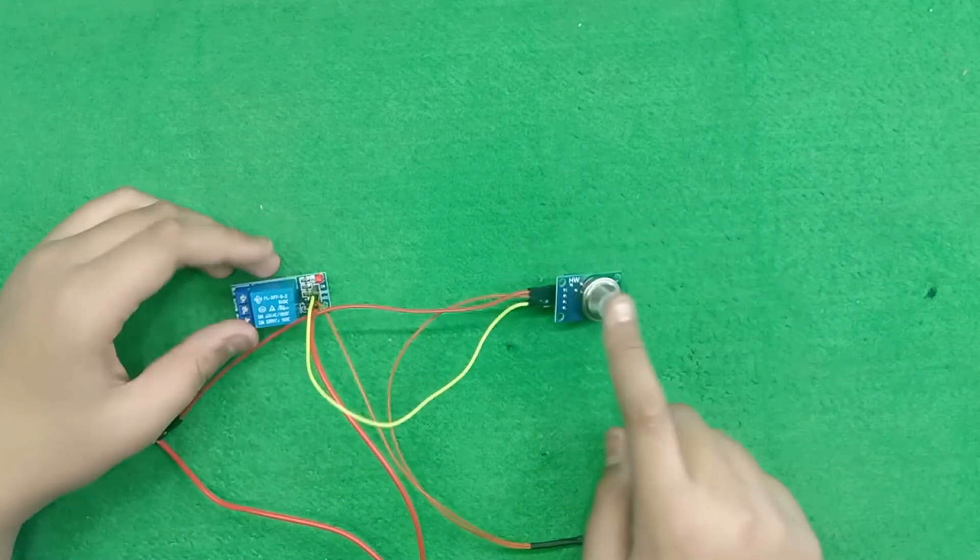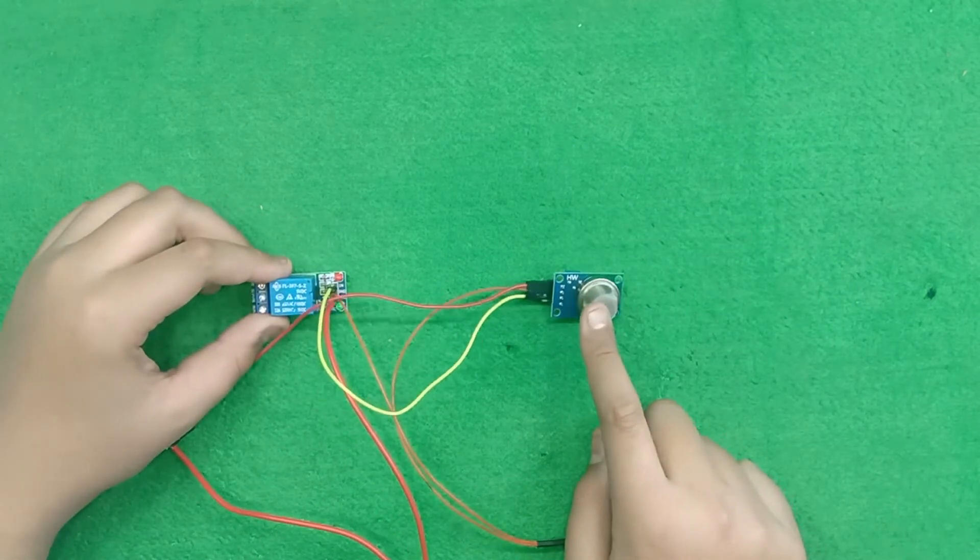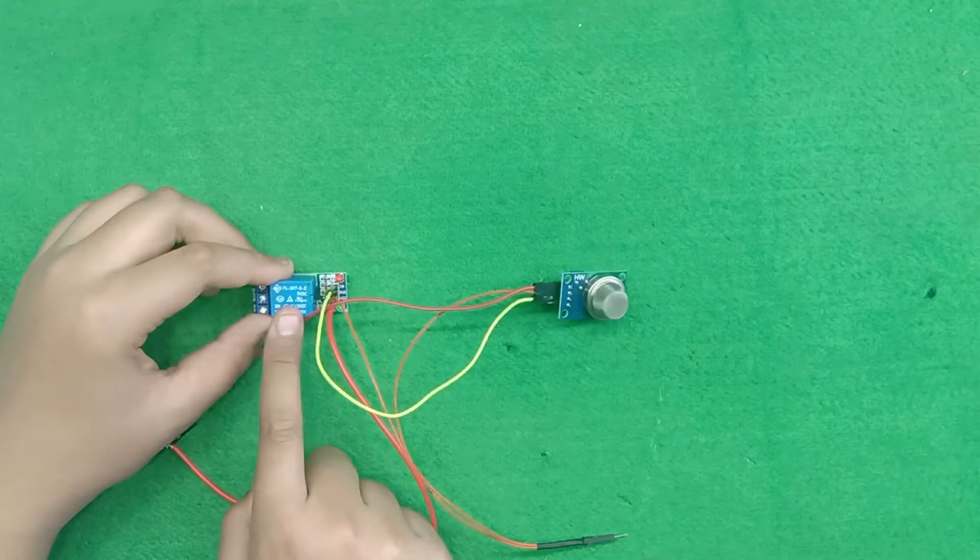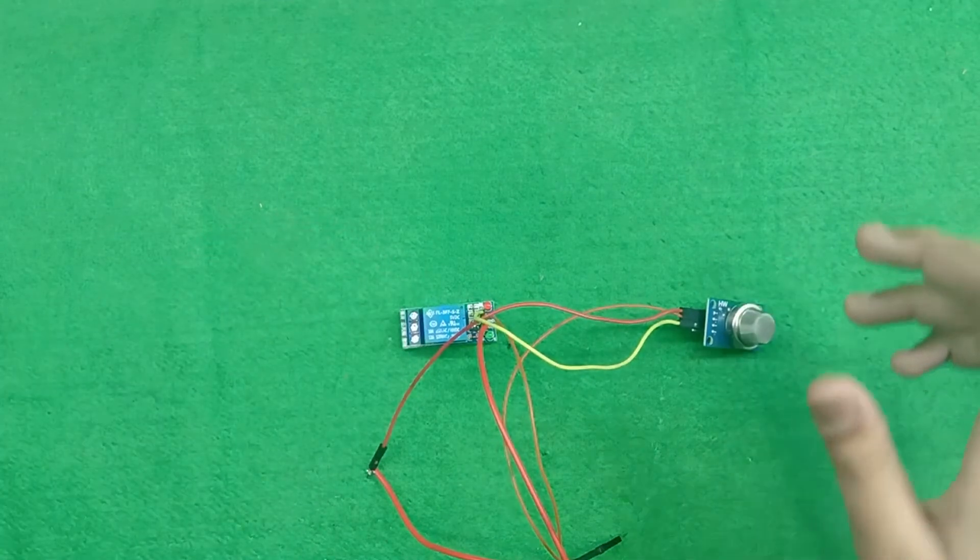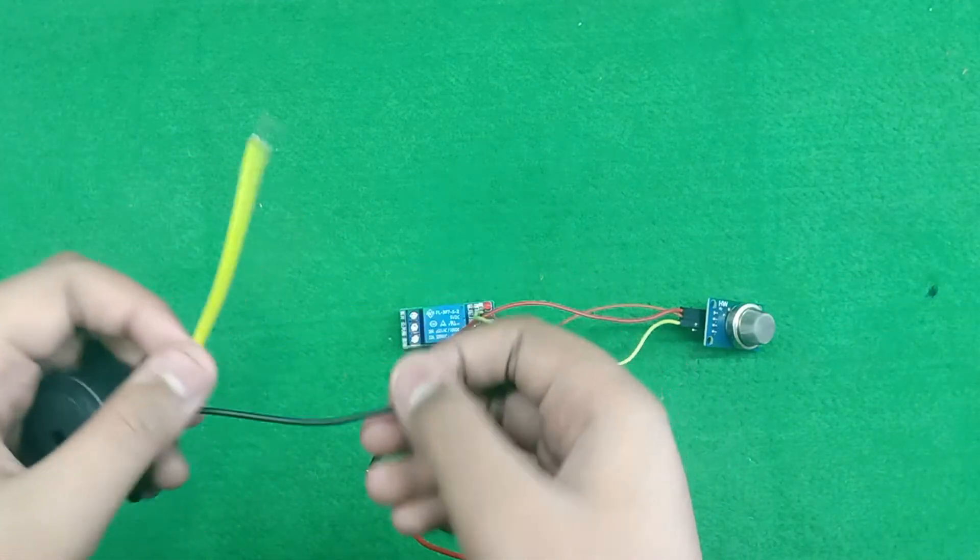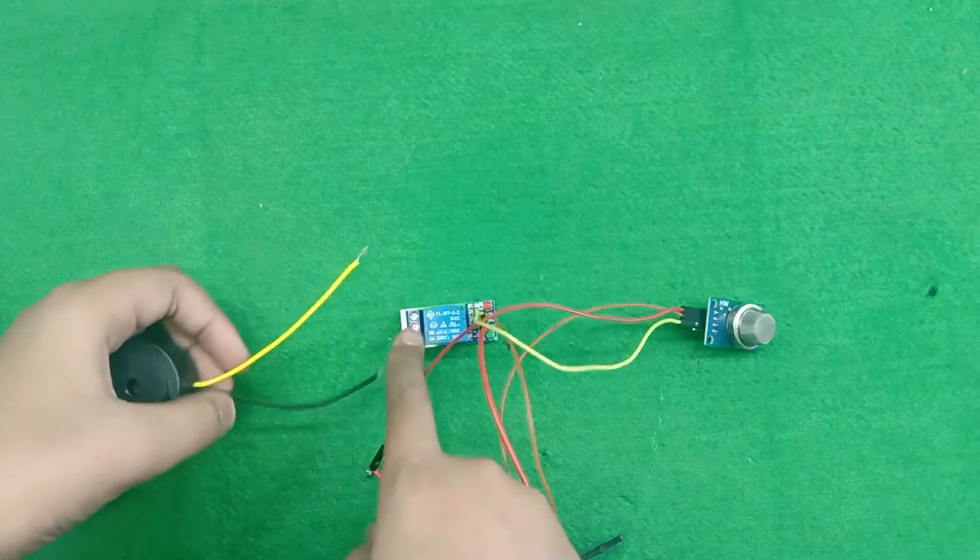Now, our MQ90 gas sensor is successfully connected to our relay module. Now, only we need to connect the 12V buzzer into this relay module output.